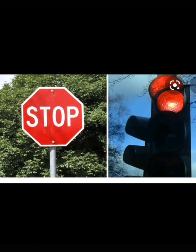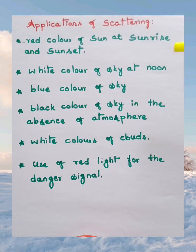Red color is used for danger signals because red light, having the highest wavelength, scatters the least in the atmosphere. It reaches the observer clearly without much energy loss and penetrates longer distances without becoming weak. Hence red color is preferably used in danger signals and even in TV remotes, compared to other colors.